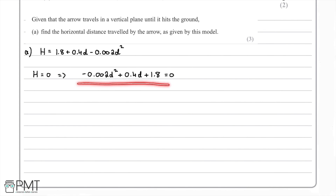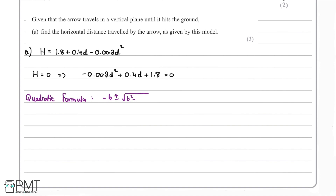We can't easily factor this, so we use the quadratic formula. Recall the quadratic formula gives the roots of a quadratic as (−b ± √(b² − 4ac)) / 2a. Here, a = −0.002, b = 0.4, and c = 1.8.